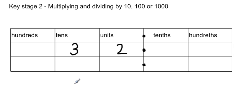So in this case we've got 32, which is three tens and two units. If we were to multiply this by 10, the digits move one place to the left.